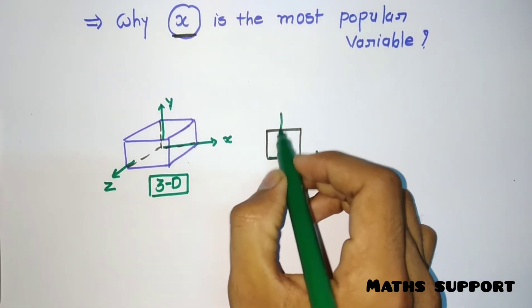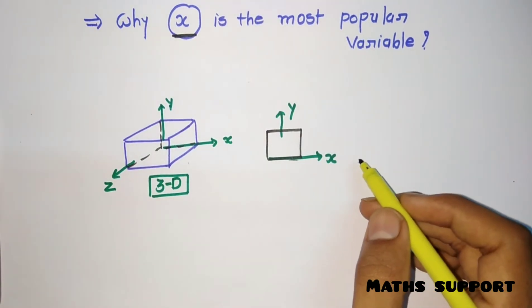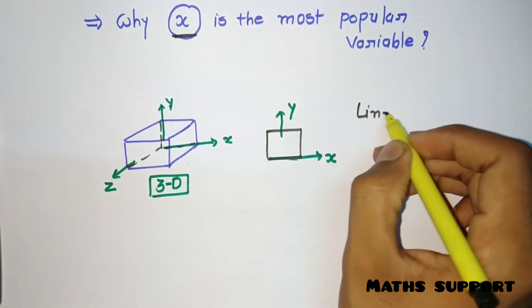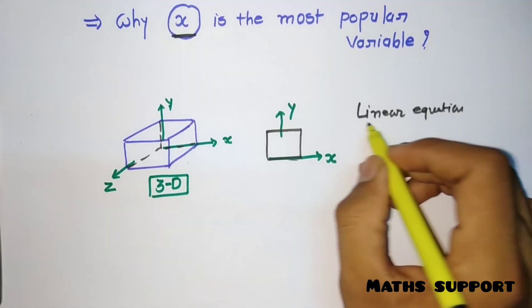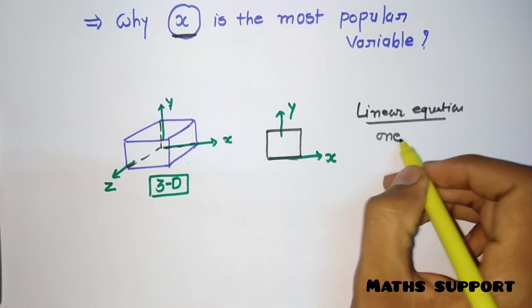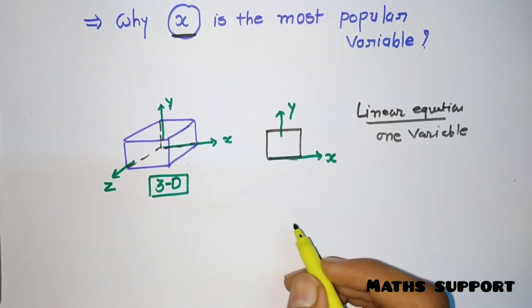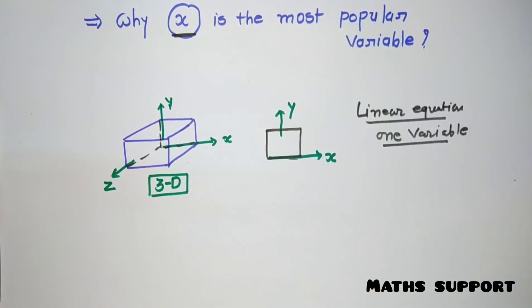Now when mathematics started, we were dealing with linear equations. What is a linear equation? In linear equations, we are supposed to find only one variable. It has only one variable. So to represent that equation, we need only one parameter.